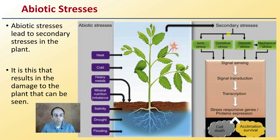These factors cause visible damage to the plant. These secondary stresses can lead to cell death, accumulation, survival responses, and other negative impacts.